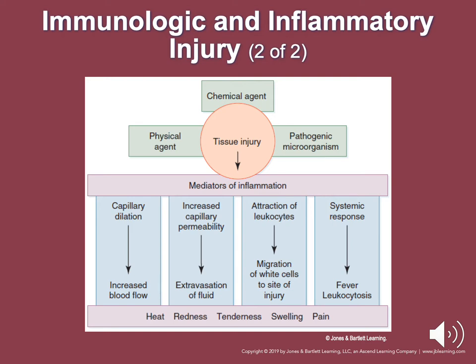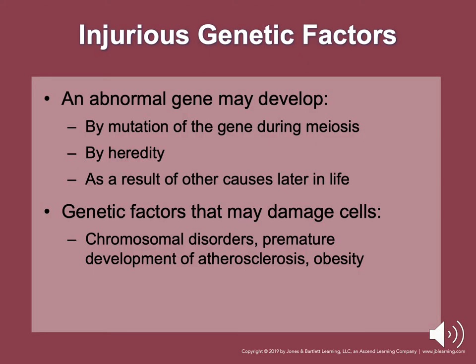Genetic factors can cause cell injury. An abnormal gene may develop by mutation during meiosis, by heredity, or as a result of other causes later in life. These genetic factors may damage cells, including chromosomal disorders, premature development of atherosclerosis, and can lead to obesity.